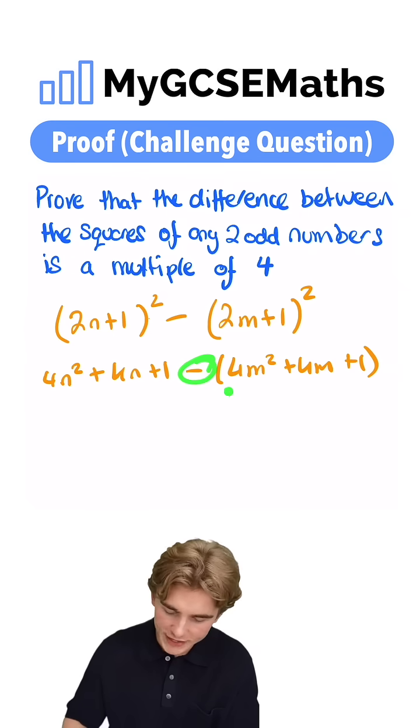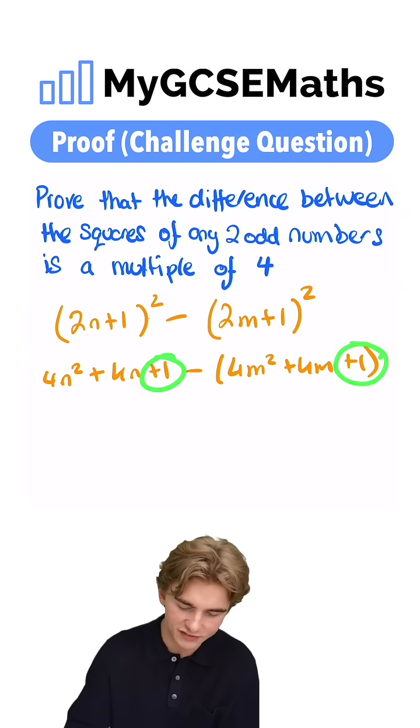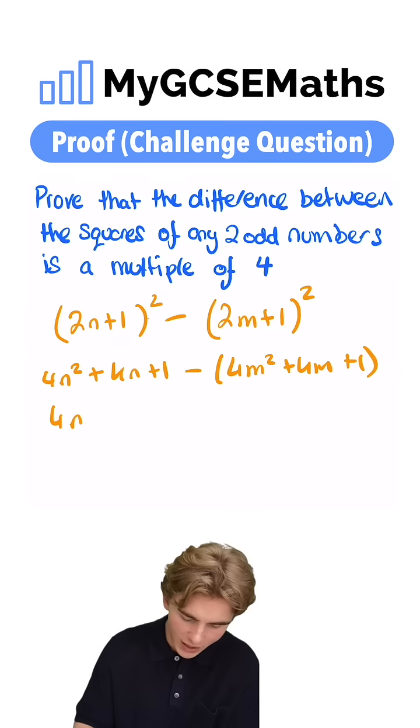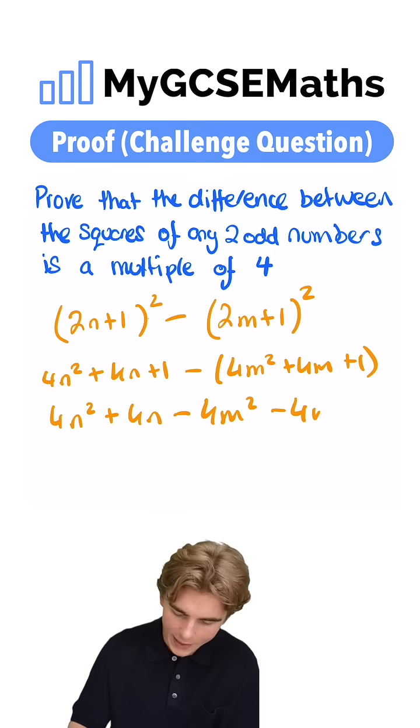Now, because we're taking away each of these terms, we're going to be taking away this one over here, so these are going to cancel out. And we're going to be left with 4n squared plus 4n subtract 4m squared subtract 4m.